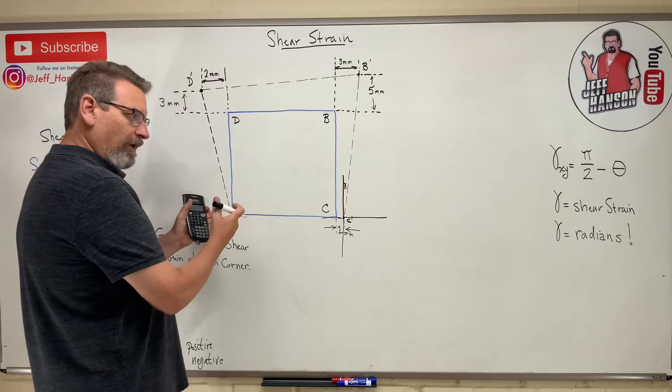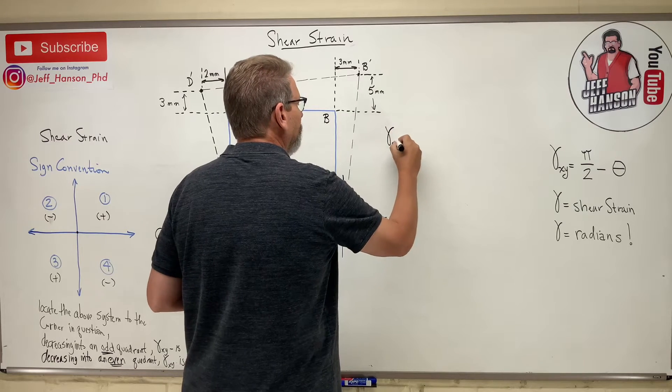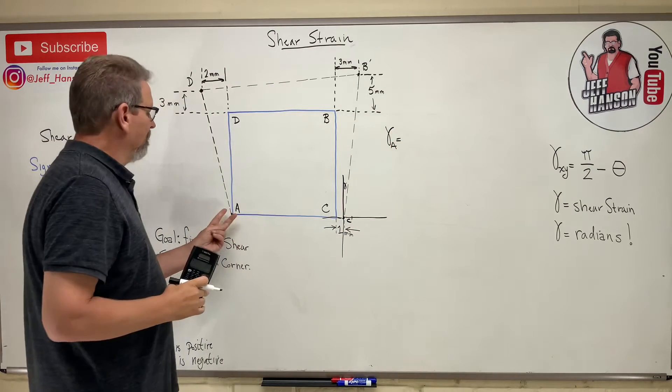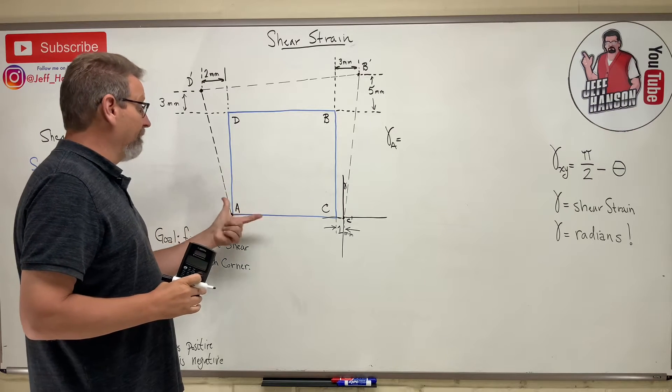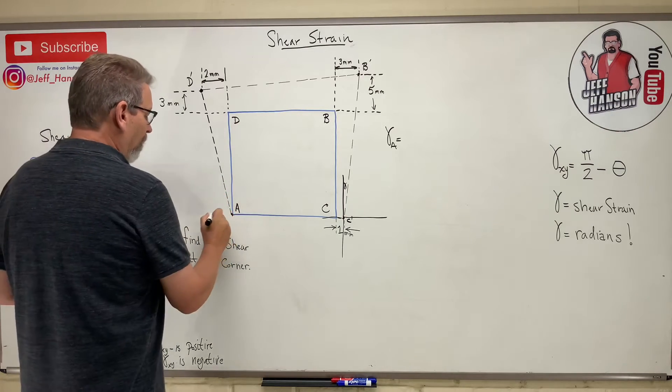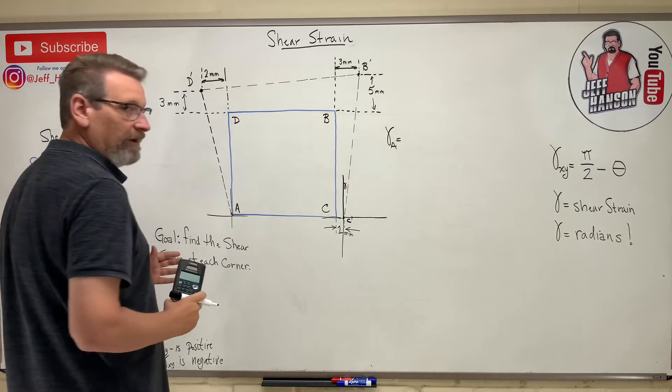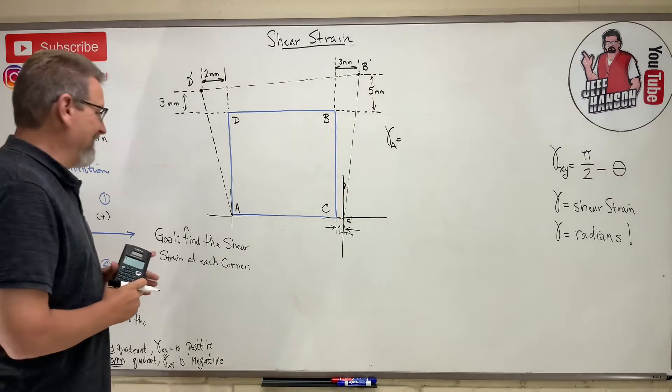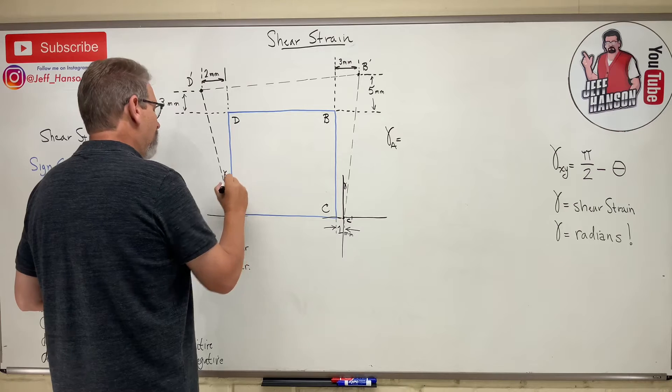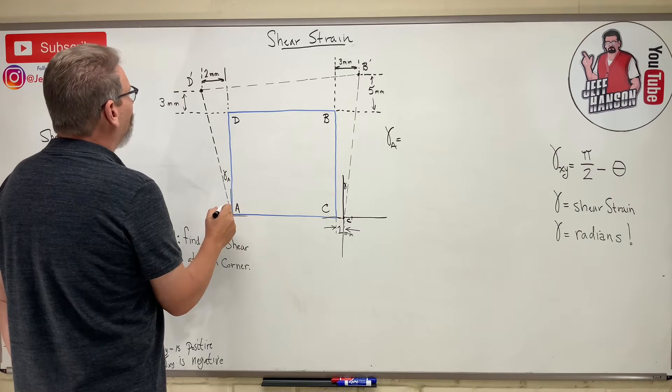So let's start off with corner A. What is gamma A going to be? Well, at corner A, what? It went from 90 degrees, it went bigger. So again, if I put my little coordinate system over here, I'm now in quadrant number two, so gamma A is going to be negative. Here's gamma A right here. So what is gamma A? Well, it's this little triangle.